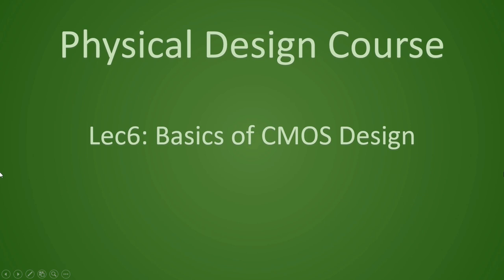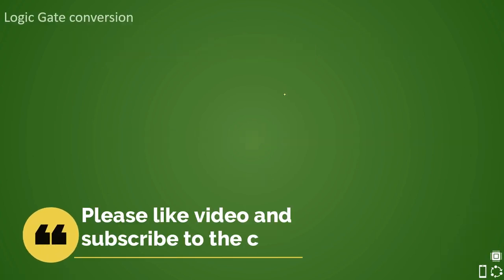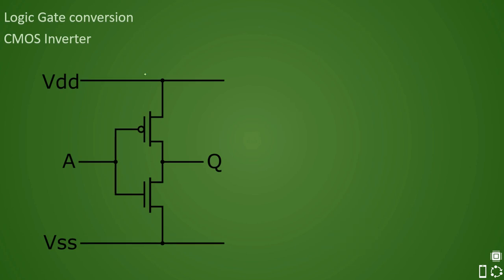Hello everyone, welcome to VLSI Academy. This is a physical design course where we shall be looking at some very important and interesting topics for those who are in the professional and engineering world. In this video we shall be looking at CMOS inverter construction and characteristics. This is a CMOS inverter where the upper transistor is a PMOS and the lower transistor is NMOS. Complementary MOS is a combination of PMOS and NMOS, and the symbol is simply a NOT gate.